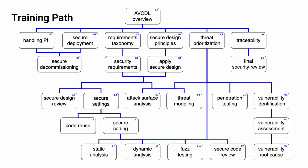This diagram shows the overall AVCDL training path. If you're taking this training, it's assumed that you've already completed the AVCDL overview training, and additionally that you've completed the requirements taxonomy, security requirements, secure design principles, apply secure design, and threat prioritization plan training. This training will cover attack surface analysis.